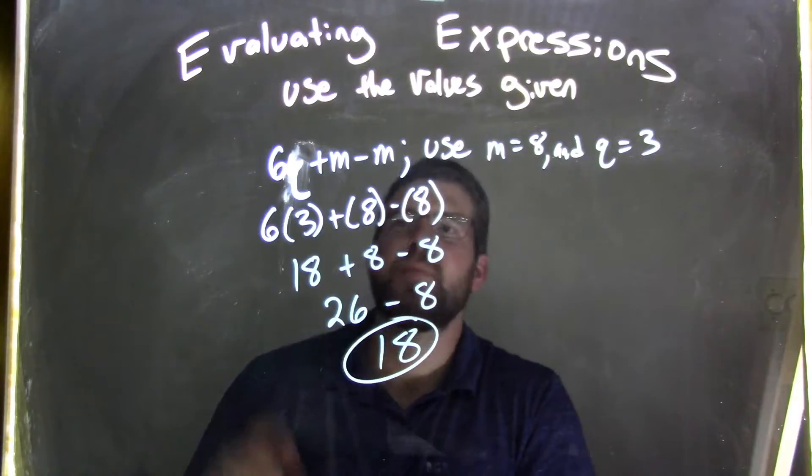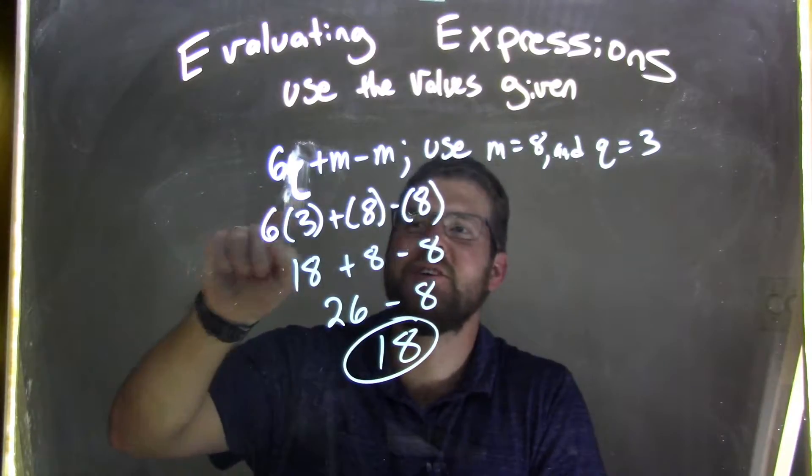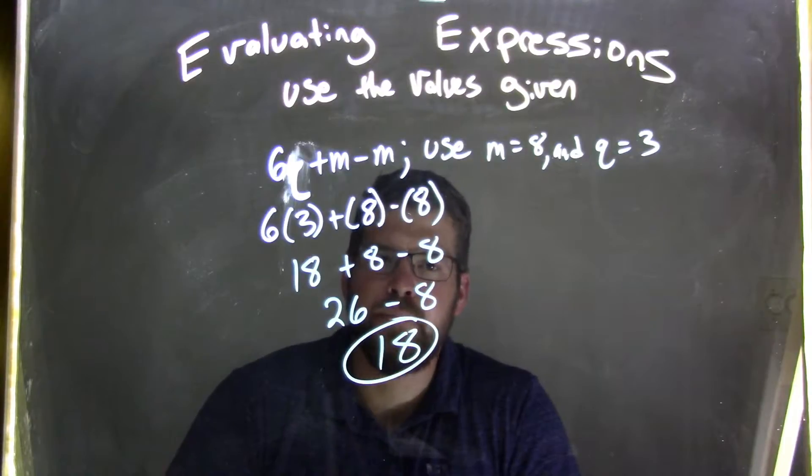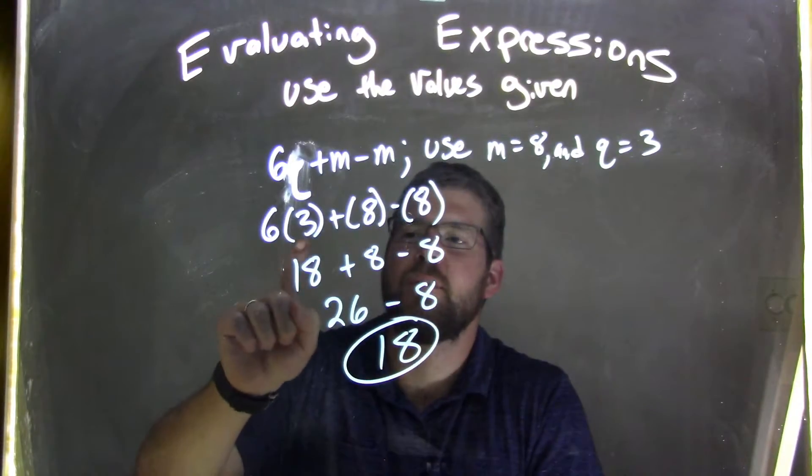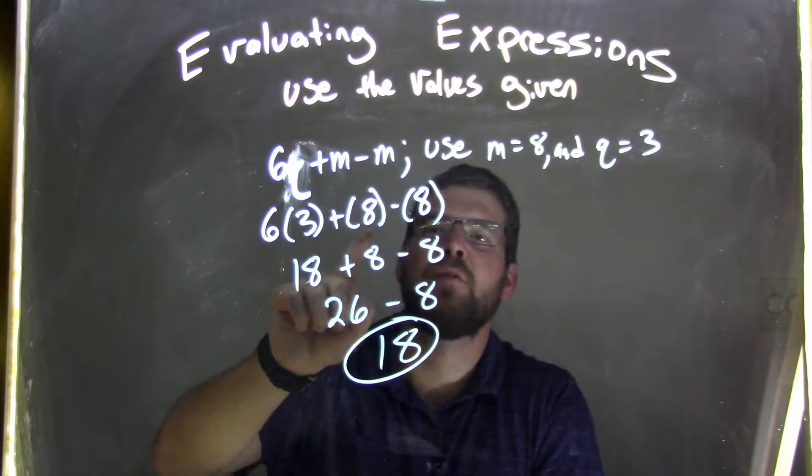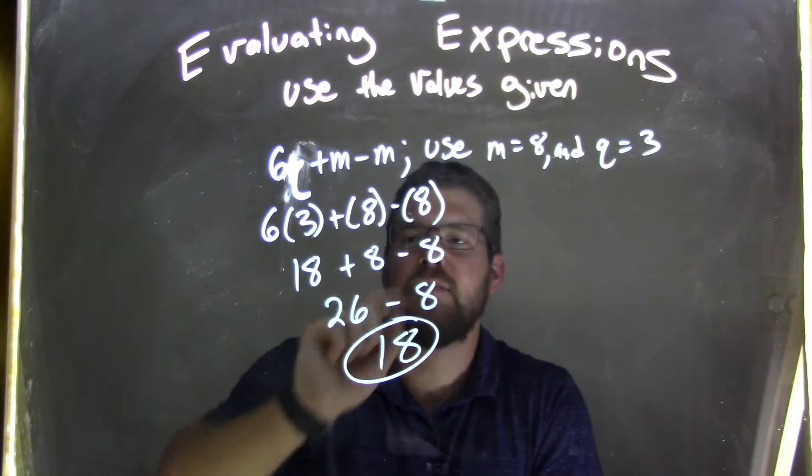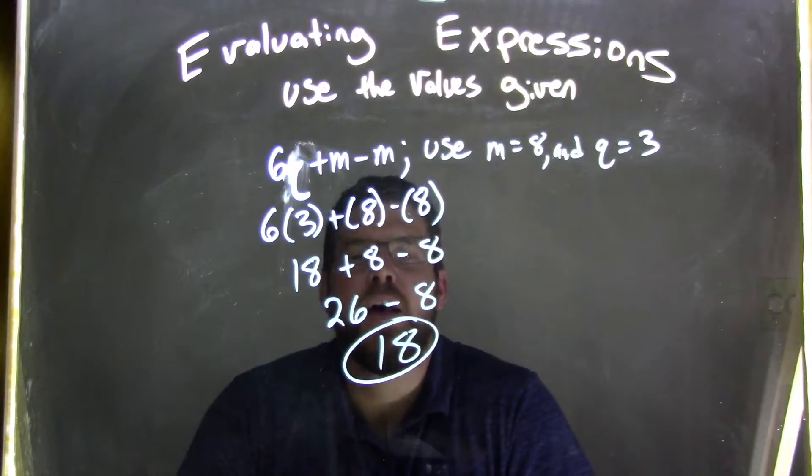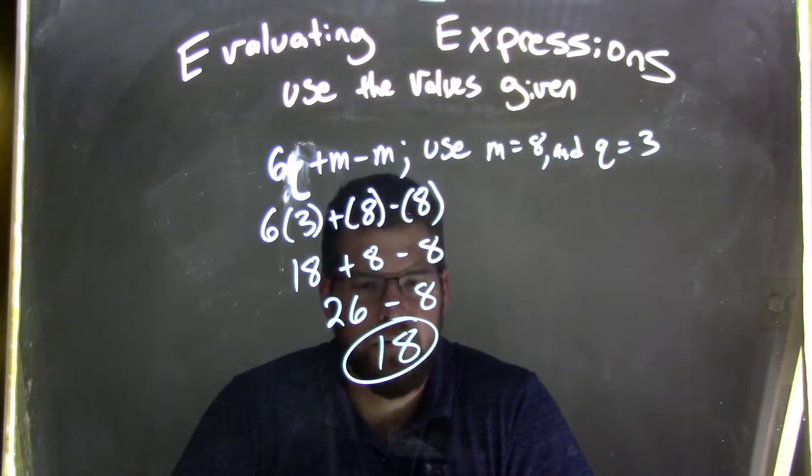Let's recap. We have 6q plus m minus m, and we use m equals 8 and q equals 3. 3 goes in for q, so 6 times 3 is 18, and 8 goes in for m. 18 plus 8 is 26, and then we subtract the last 8 to get back to 18.